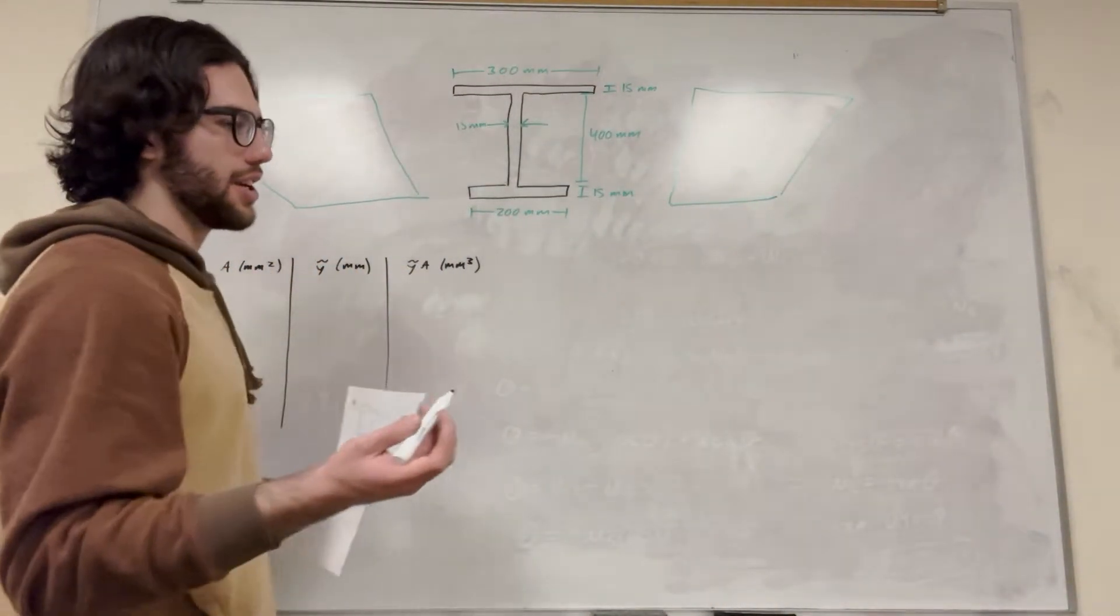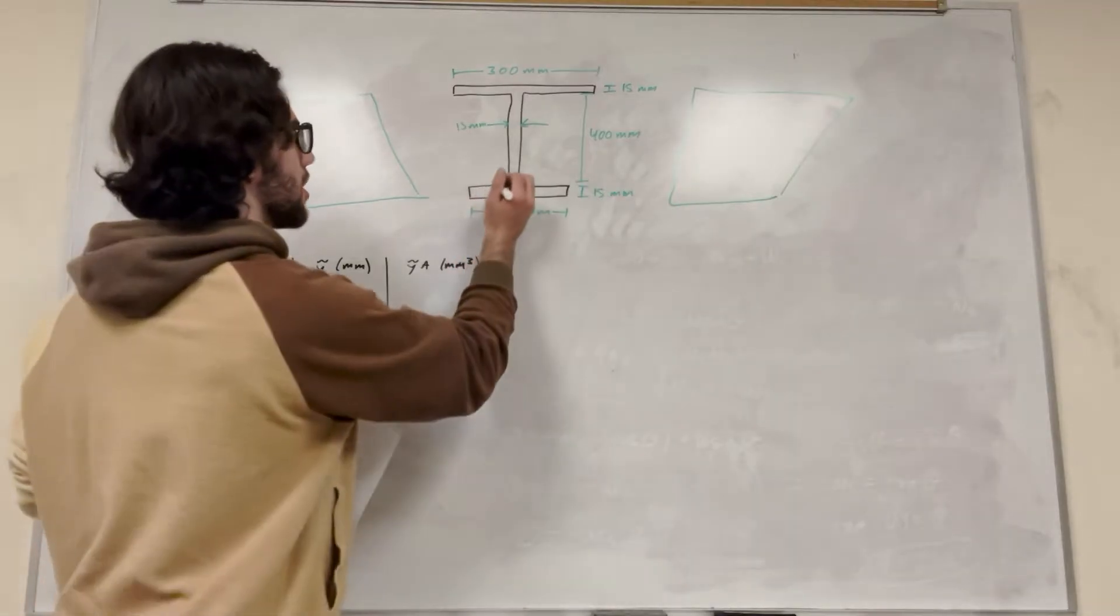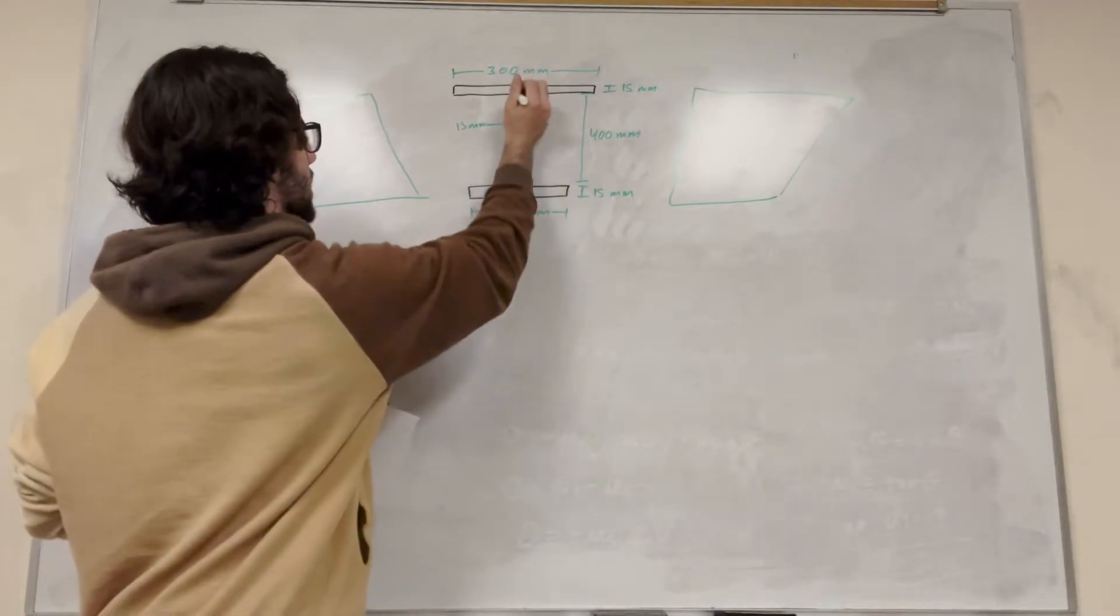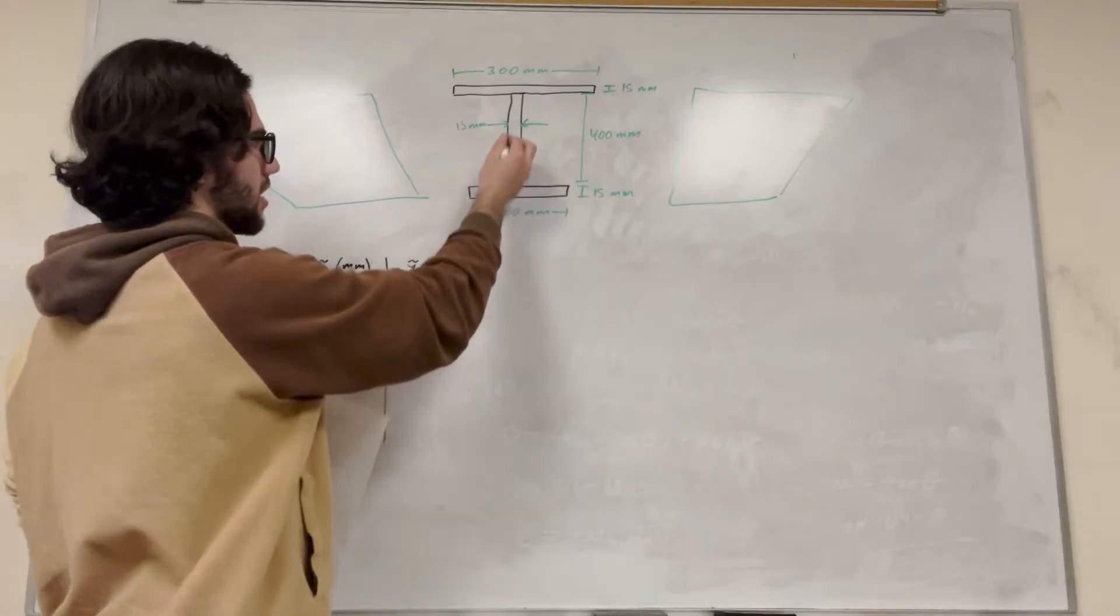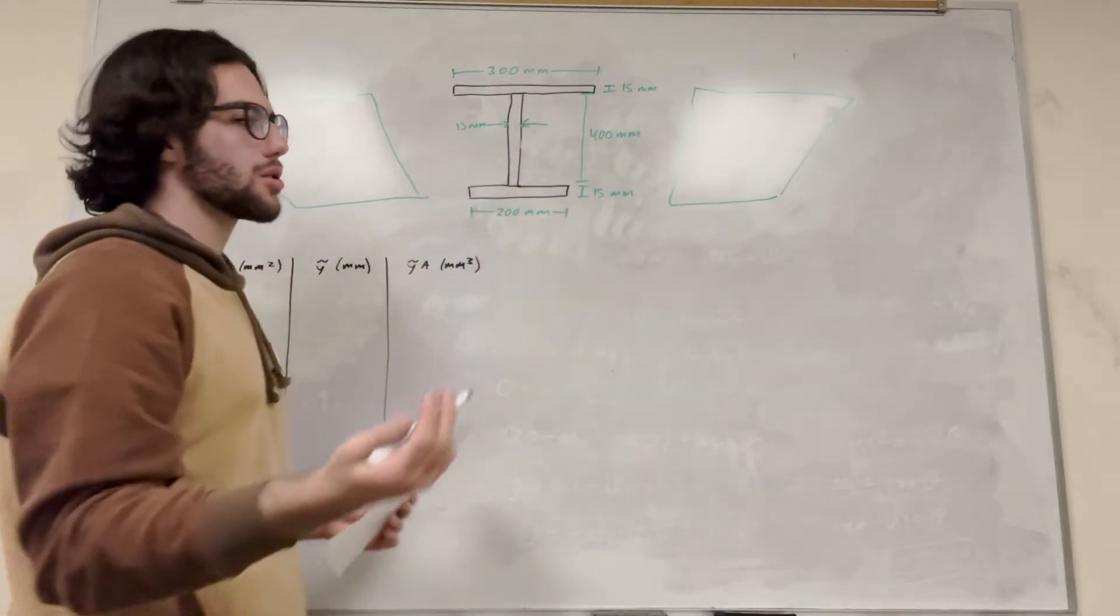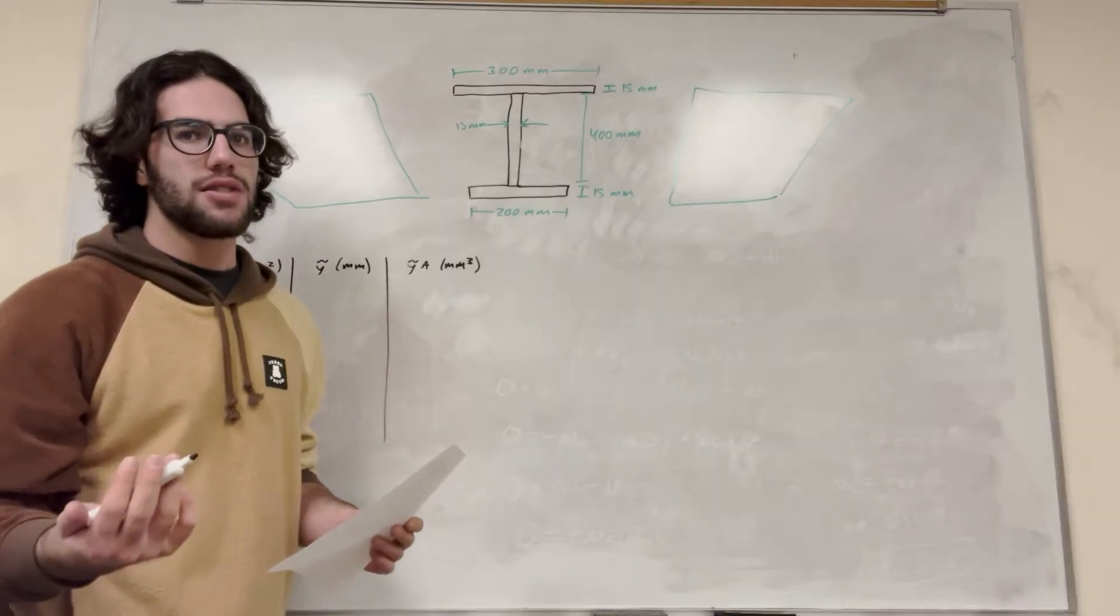So you want shapes that are all very easy to find the center mass of. So the first one, let's make these two rectangles. So now we have three rectangles. We have this rectangle, this rectangle, and this rectangle. Those are all going to be really easy to find the center of mass of, so that's why we did that.